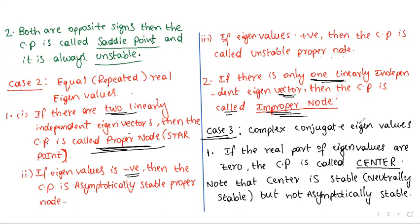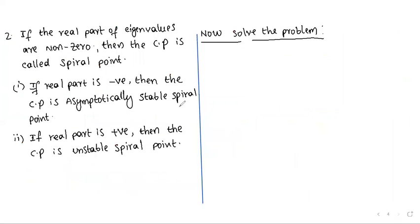Case 3: Complex conjugate eigenvalues of the form A + iB. If the real part A = 0, the critical point is called a center, which is stable (neutrally stable) but not asymptotically stable. If the real part A ≠ 0, the critical point is a spiral point. If the real part is negative, it is an asymptotically stable spiral; if positive, it is an unstable spiral.